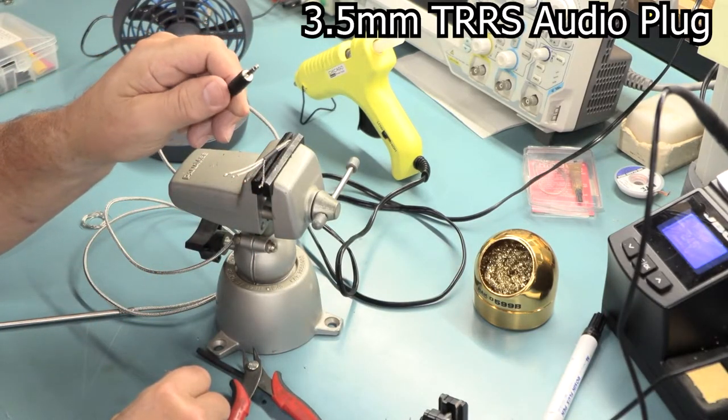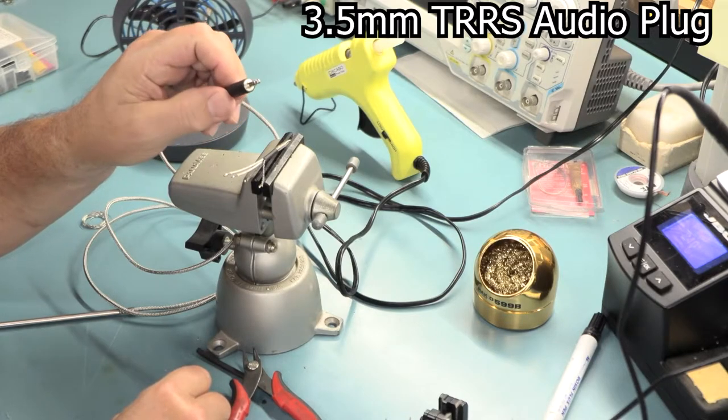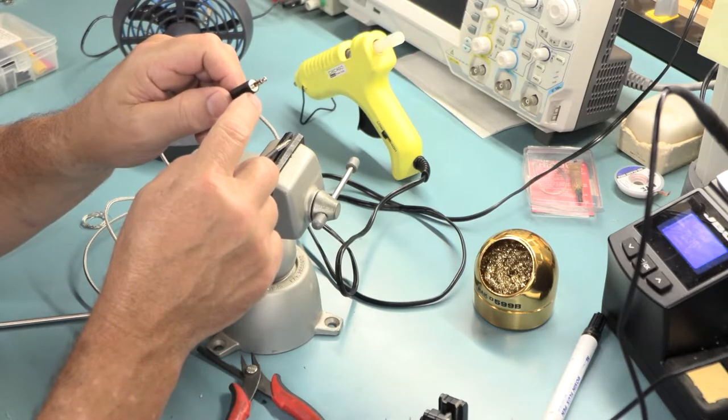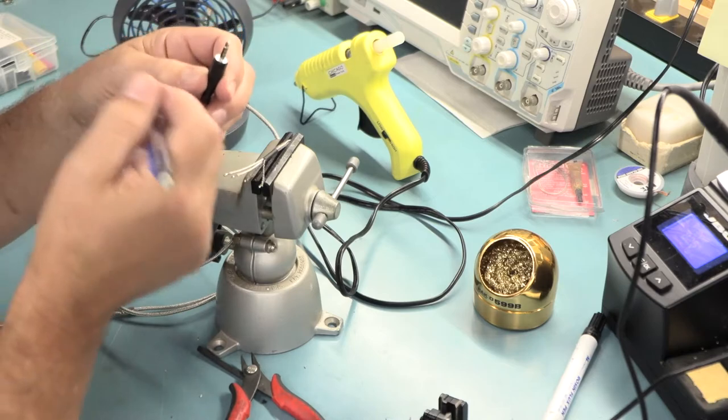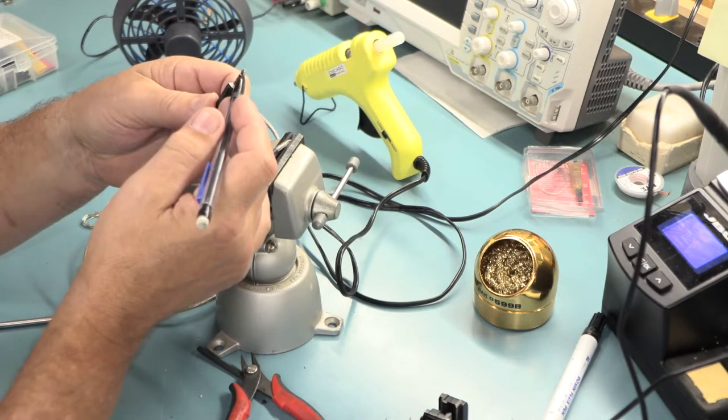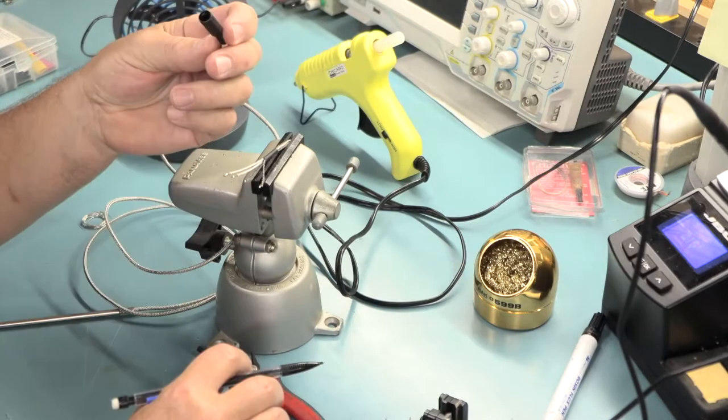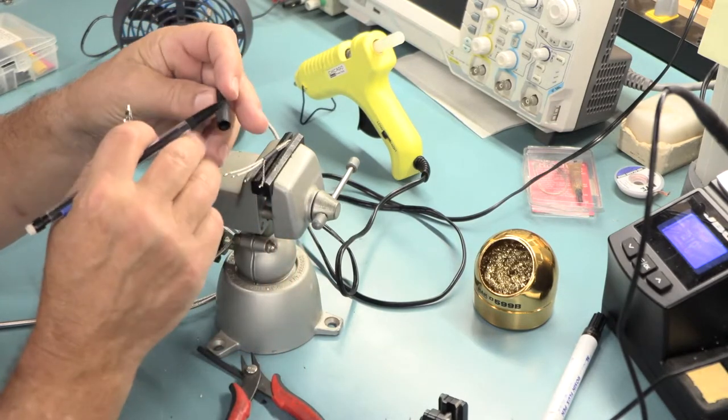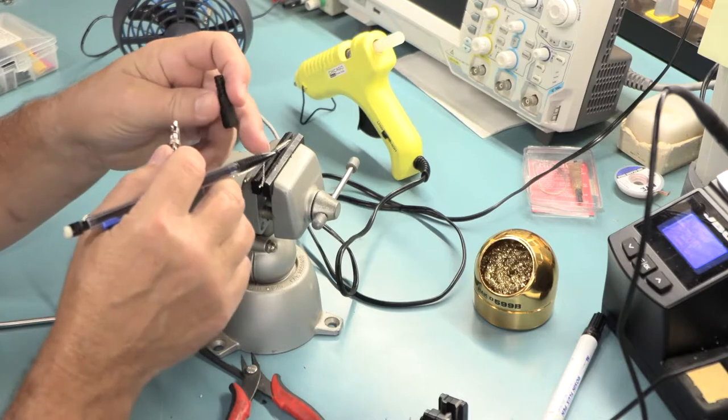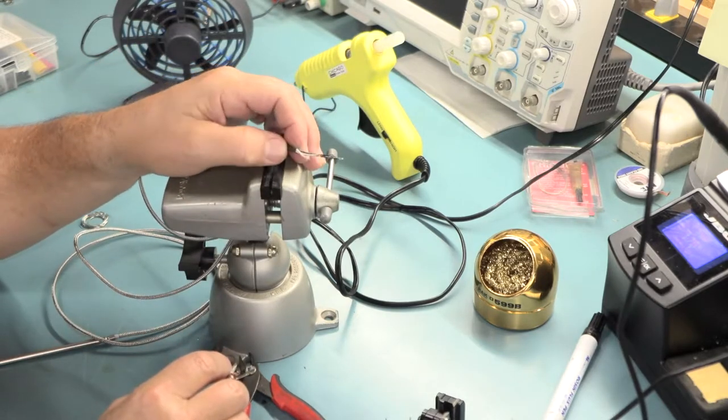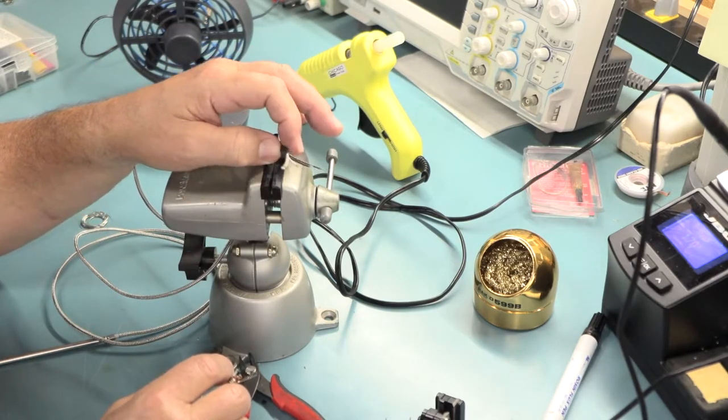This is just a standard TRRS. It stands for Tip Ring Ring Sleeve. It's what's on the other one as well. This one though has a plastic cover with a strain relief. So we've got the plastic sleeve and then we have the heat shrink over this.